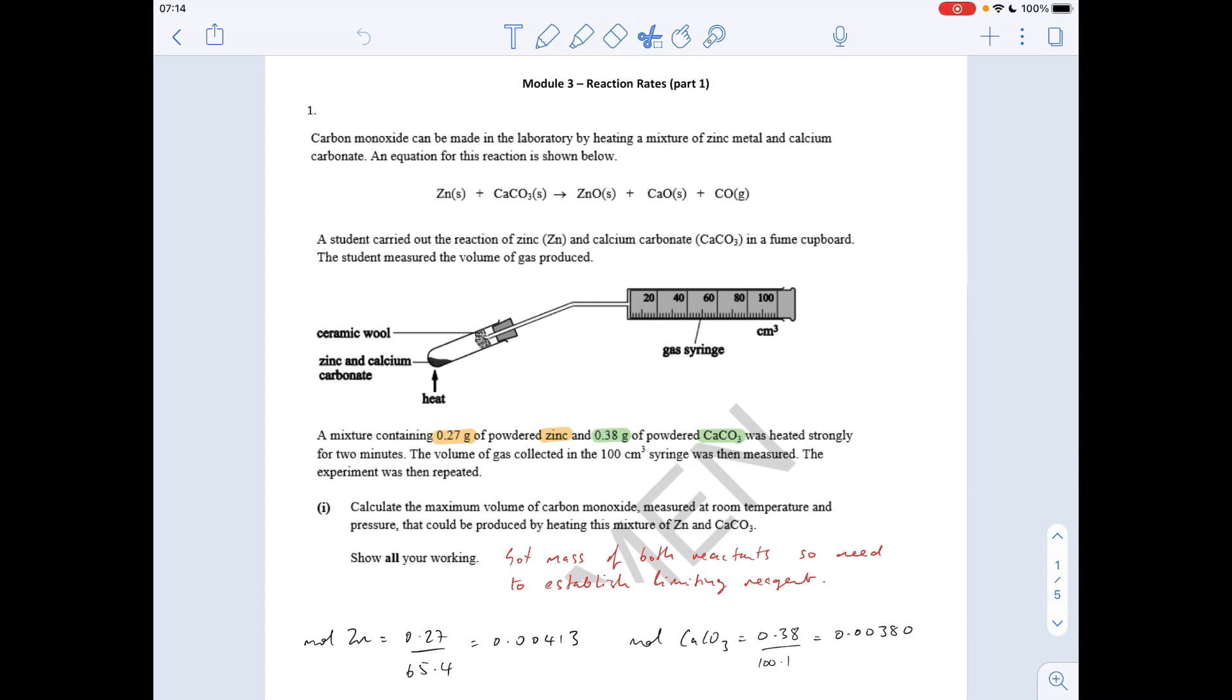The first question: calculate the maximum volume of carbon monoxide measured at RTP, room temperature and pressure, that could be produced by heating this mixture of zinc and calcium carbonate. You'll notice I've highlighted the mass of zinc and the mass of calcium carbonate. Because we've got the mass of both reactants, we need to establish the limiting reagent, and that's going to limit how much carbon monoxide is made in the reaction.